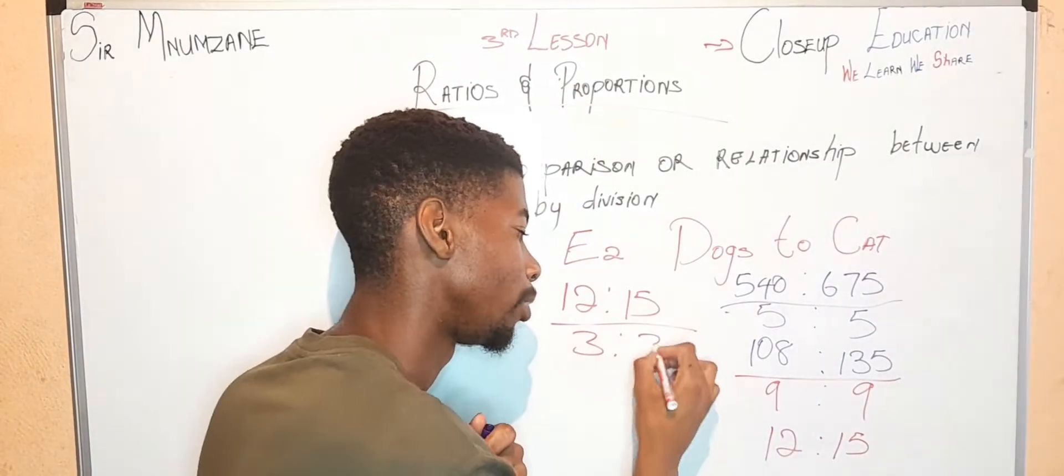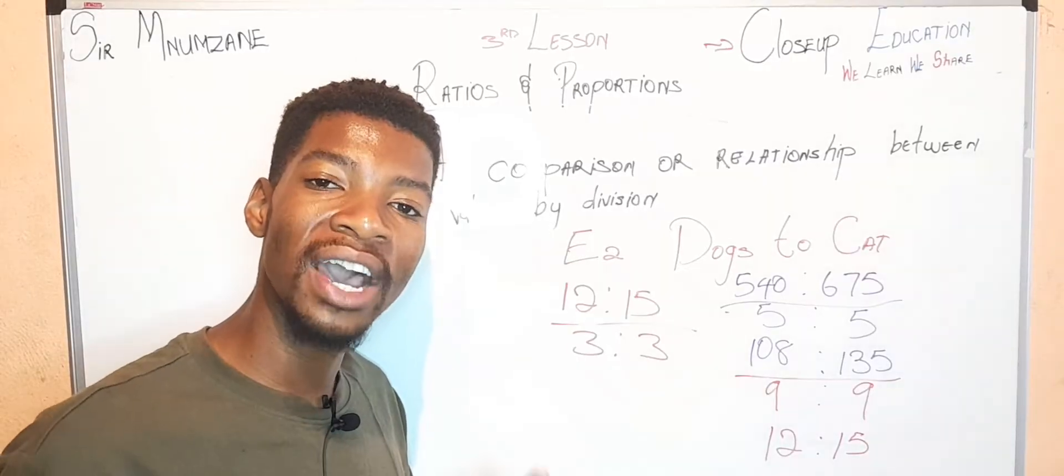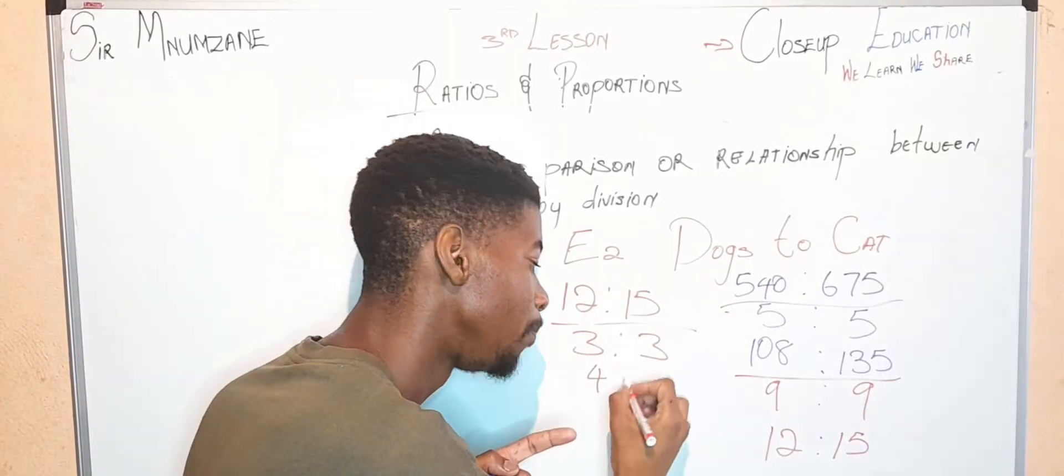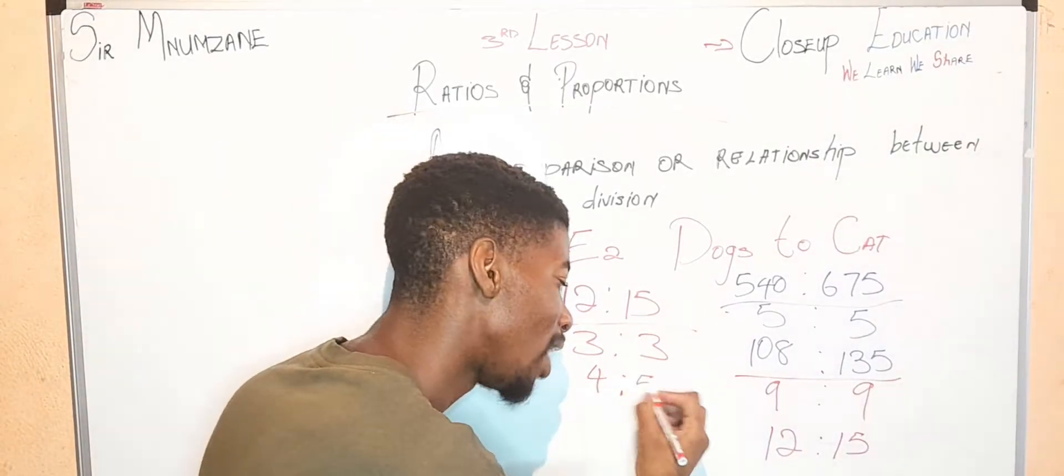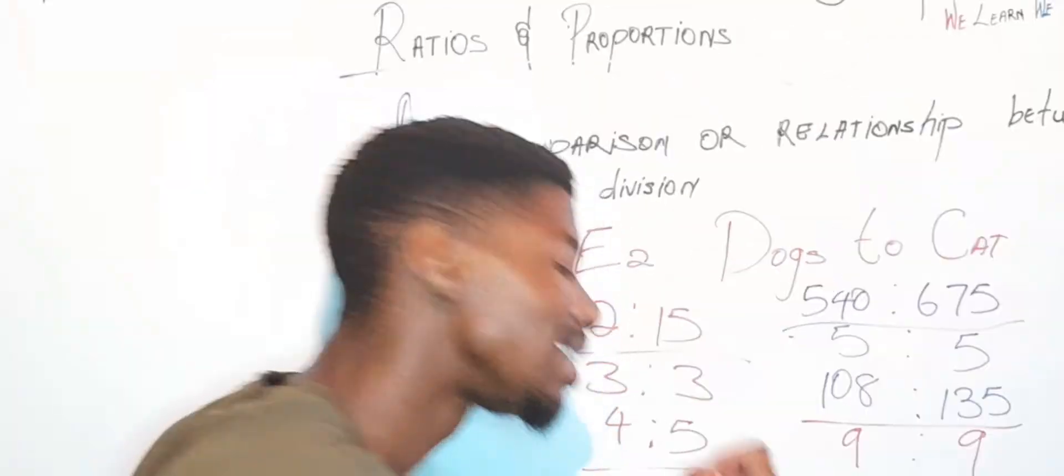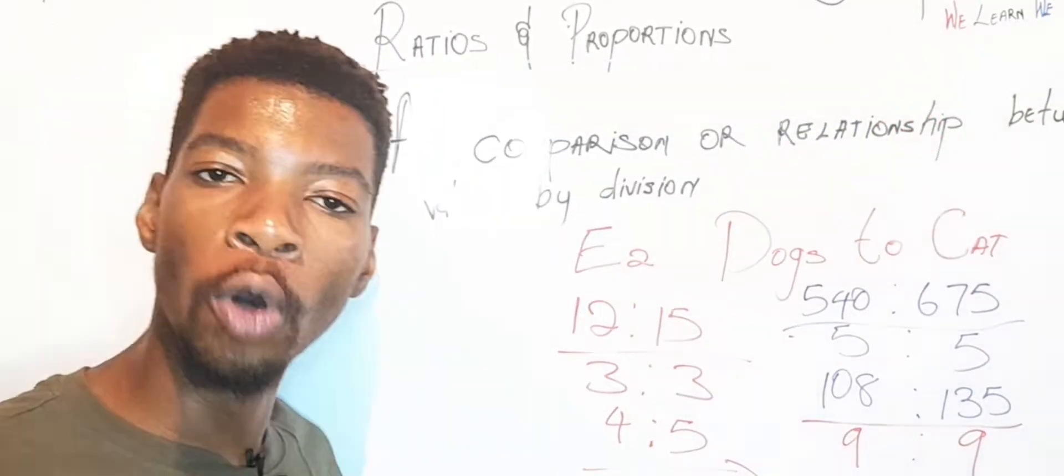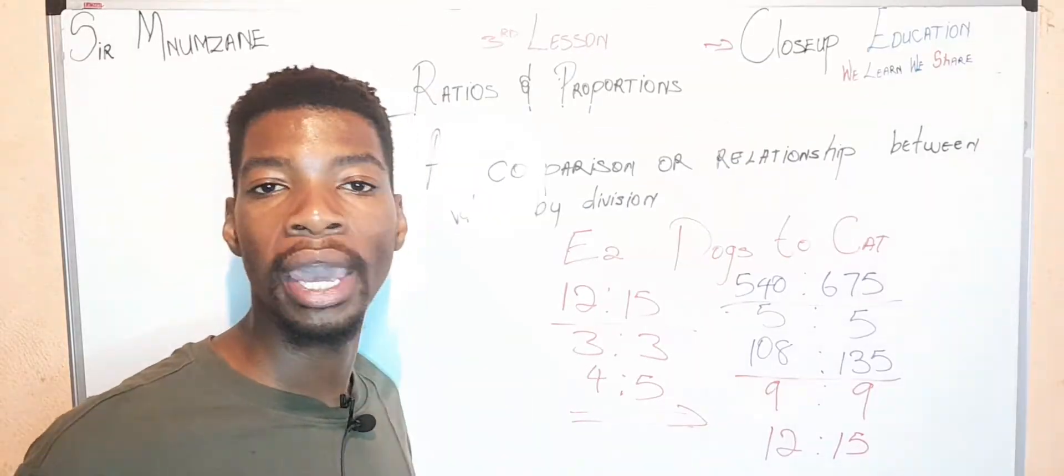We have 12 and 15. Are we done? No, we can still simplify 12 and 15 with the same number. Divide by 3. So 12 divided by 3 is 4, and 15 divided by 3 is 5. This is in its simplest form. You can never go down from 4:5. This is where we end.